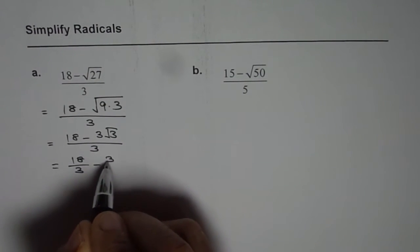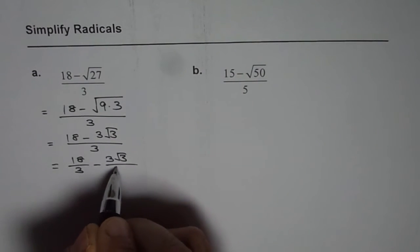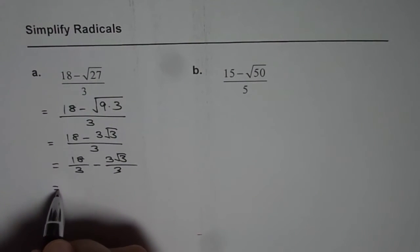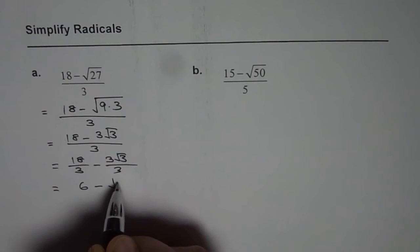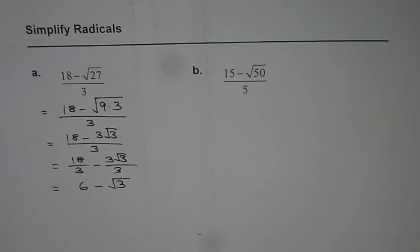18 divided by 3 minus 3 square root 3 divided by 3. And that gives you 6 minus square root 3. So that's one way of doing it.